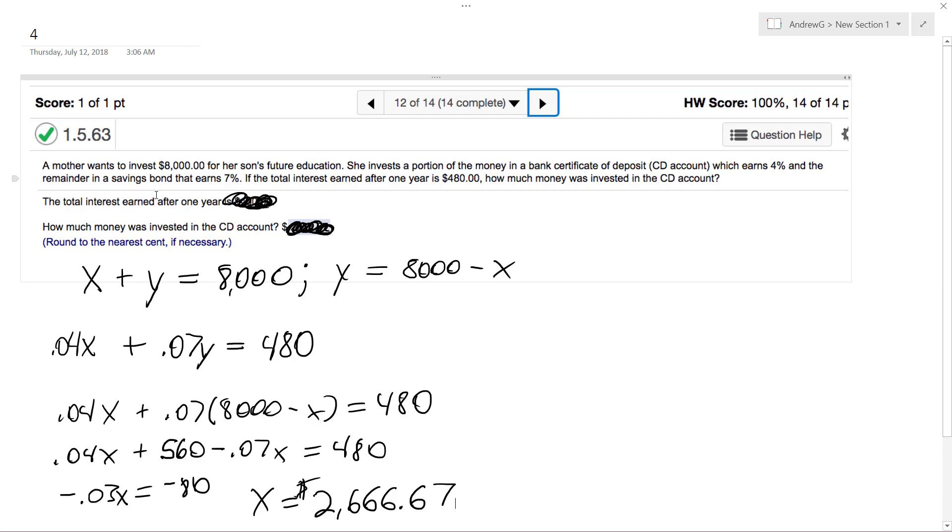What's the total interest after one year? In that case, it's just simple interest. So 0.04 times 2,666.67 times 0.04. So the interest earned on CD is equal to about $106.67.